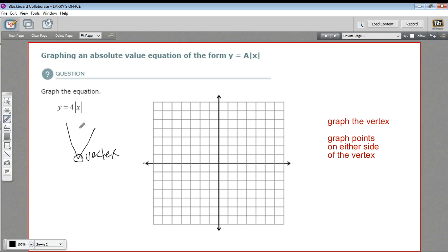The vertex is where what's inside the absolute value symbol equals zero. In our case, the only thing we have inside the absolute value symbol is x, so we can just set x to zero and then calculate y. That's going to give us the vertex. So if I put in zero for x, the absolute value of zero is just zero, and four times zero is still zero. So our vertex is at the point (0, 0).